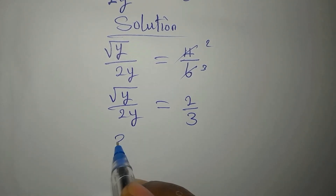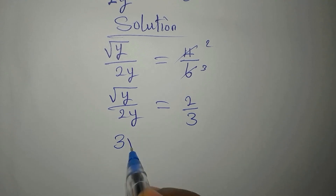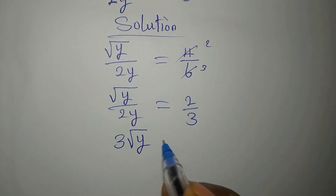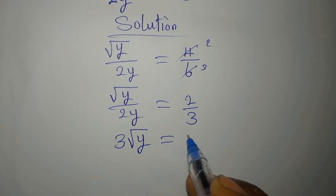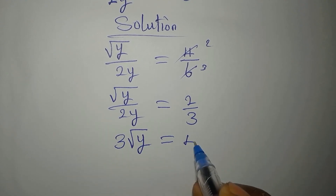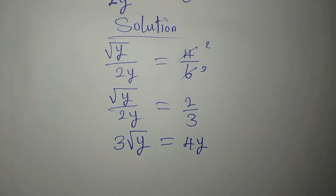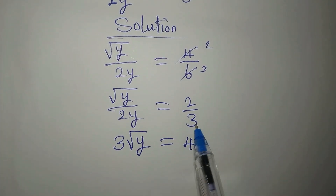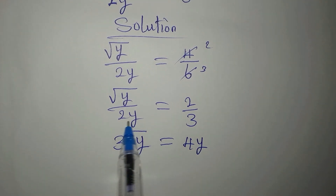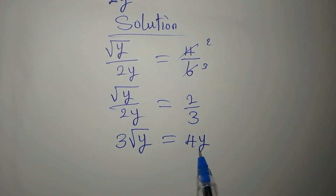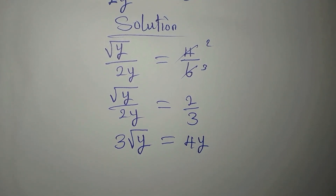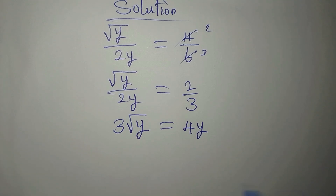At this point we can cross multiply, so we have 3 times square root of y equals 2y times 2, which is 4y. So cross multiplying gives us 3 square root of y equals 4y.